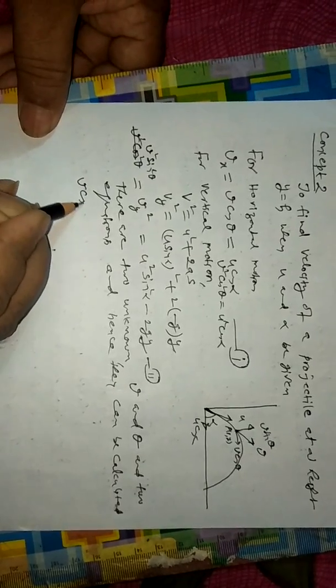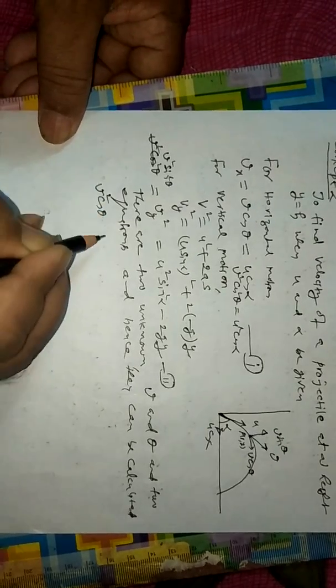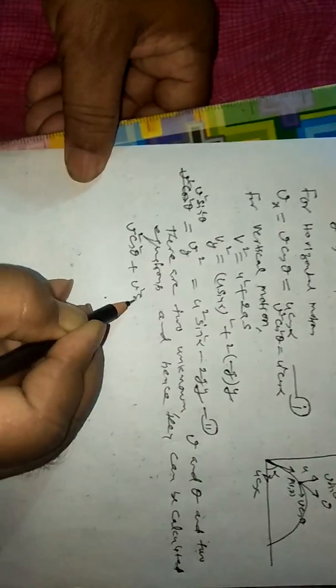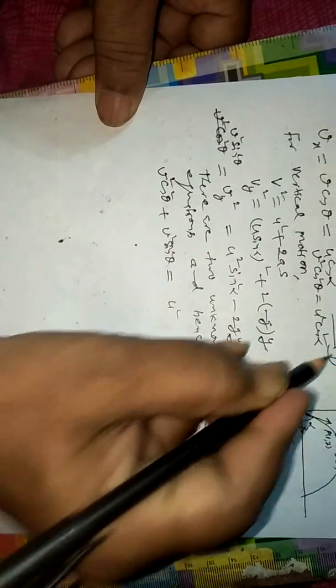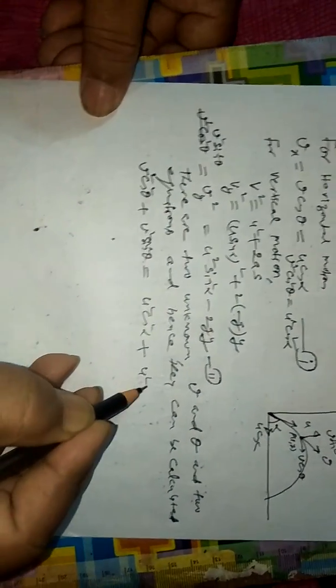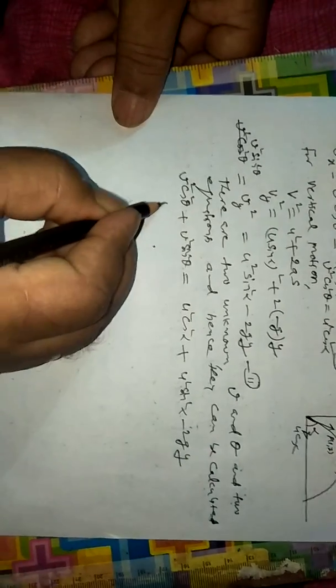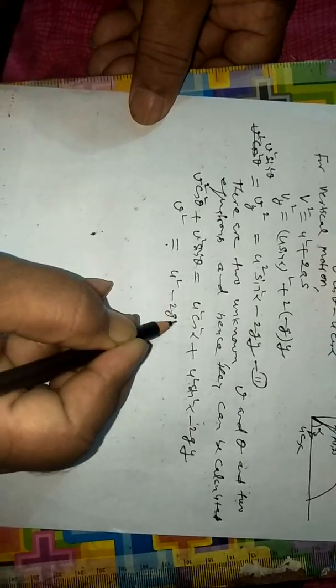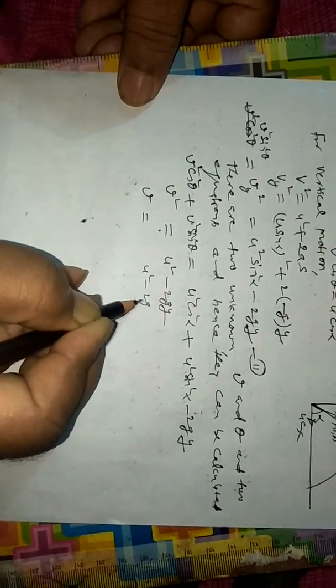v squared cos squared theta plus v squared sin squared theta equals u squared cos squared alpha plus u squared sin squared alpha minus 2gy. So after solving, v equals square root of u squared minus 2gy.